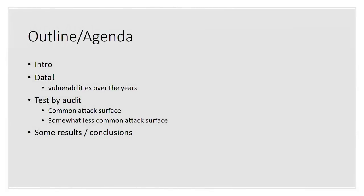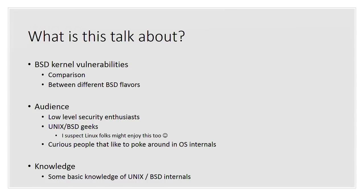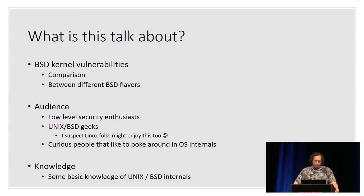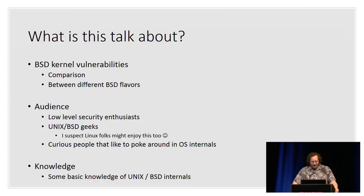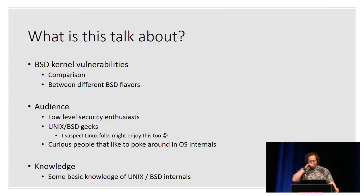My presentation is split into three or four pieces: there's an intro, then some data, then some lack of data where I test a couple of things and gather results, then I present my results and conclusions. This talk is a comparison between the different current BSD flavors. I expect some basic Unix kernel-ish knowledge from the audience. People who might appreciate this talk include low-level security enthusiasts, BSD geeks, Linux users, and people curious about OS internal security.